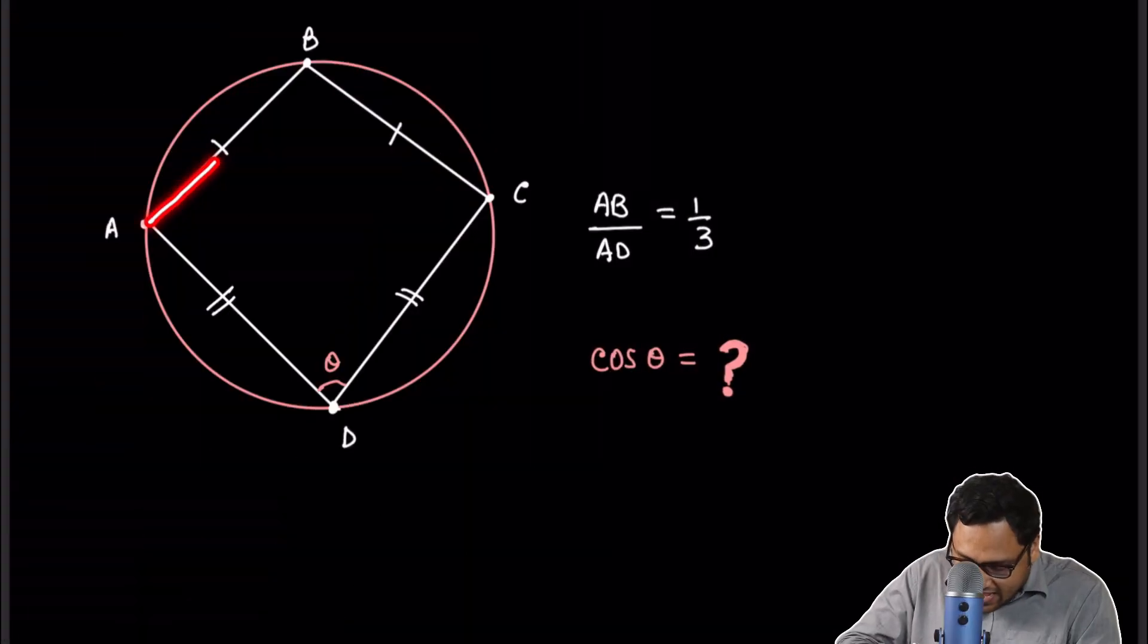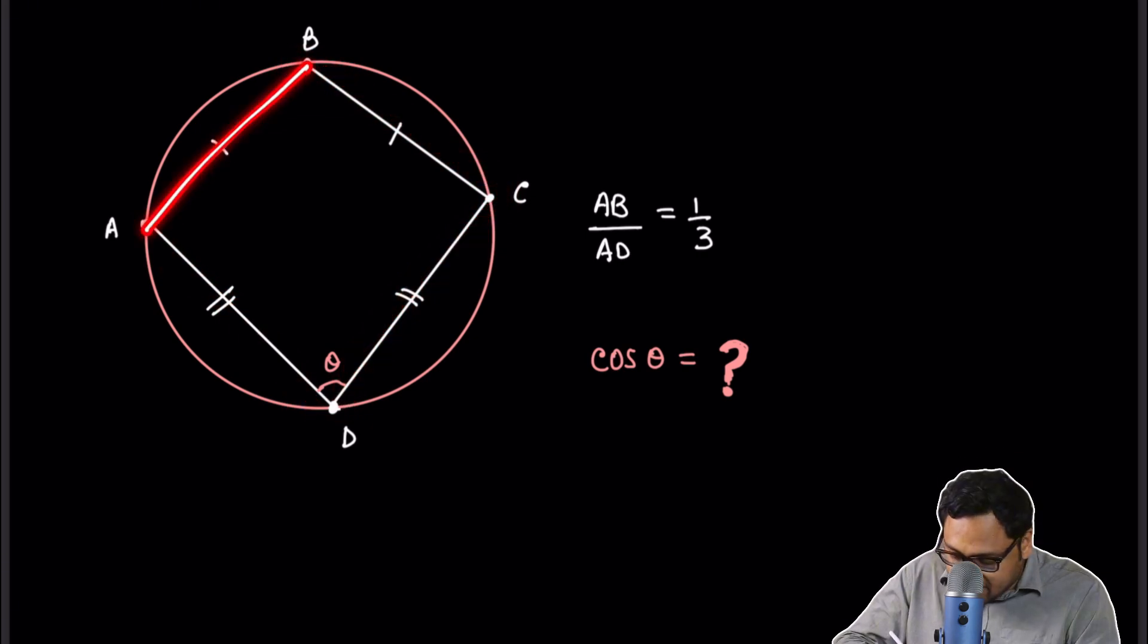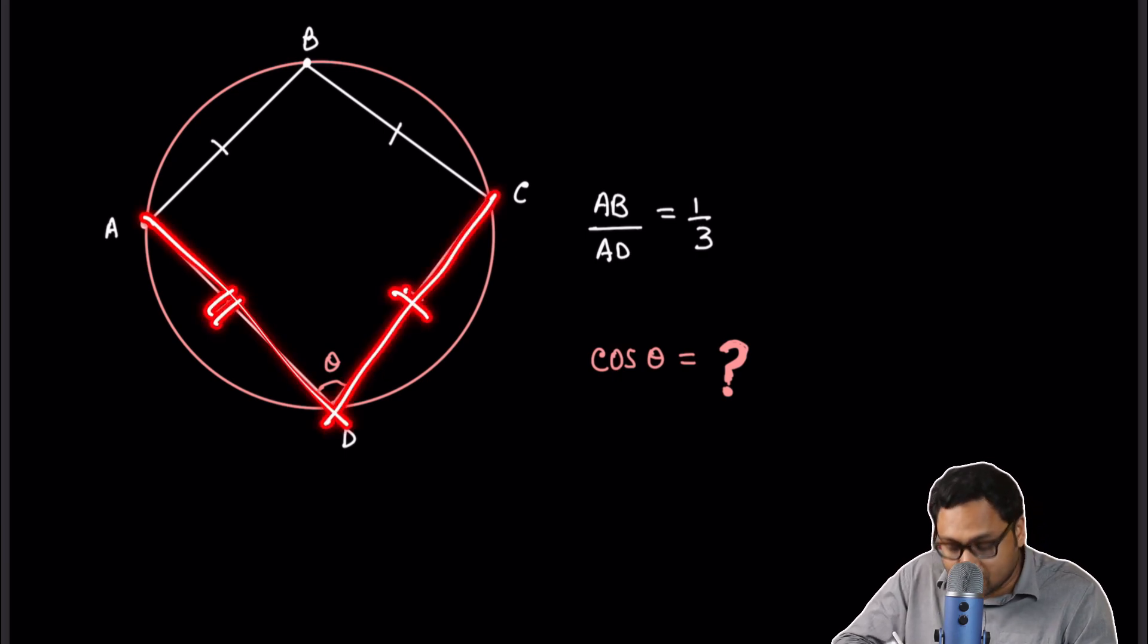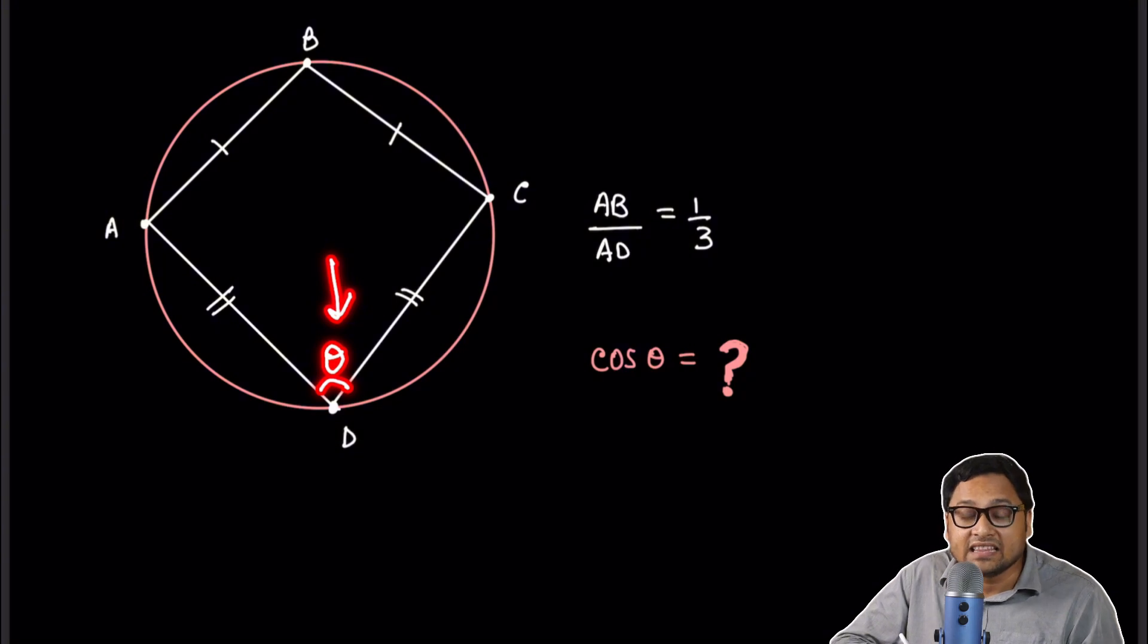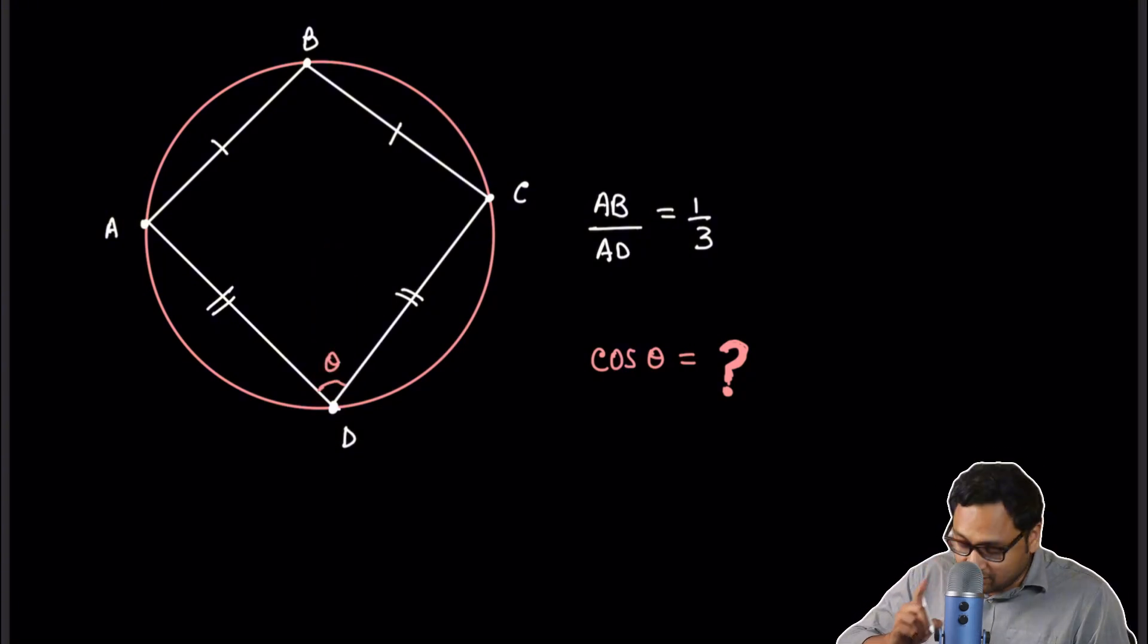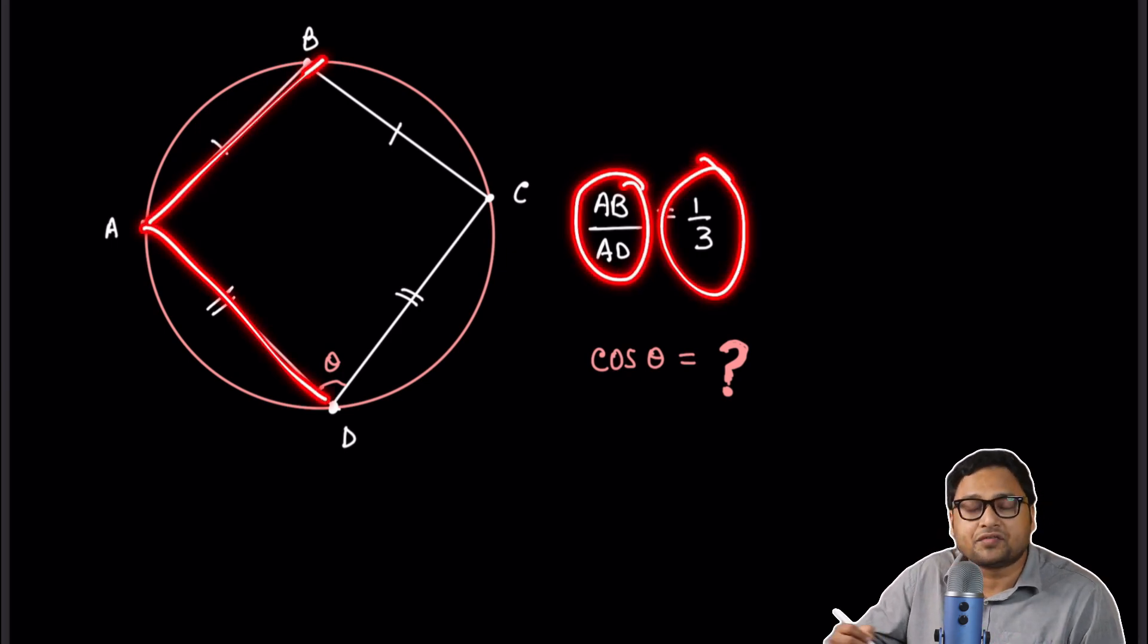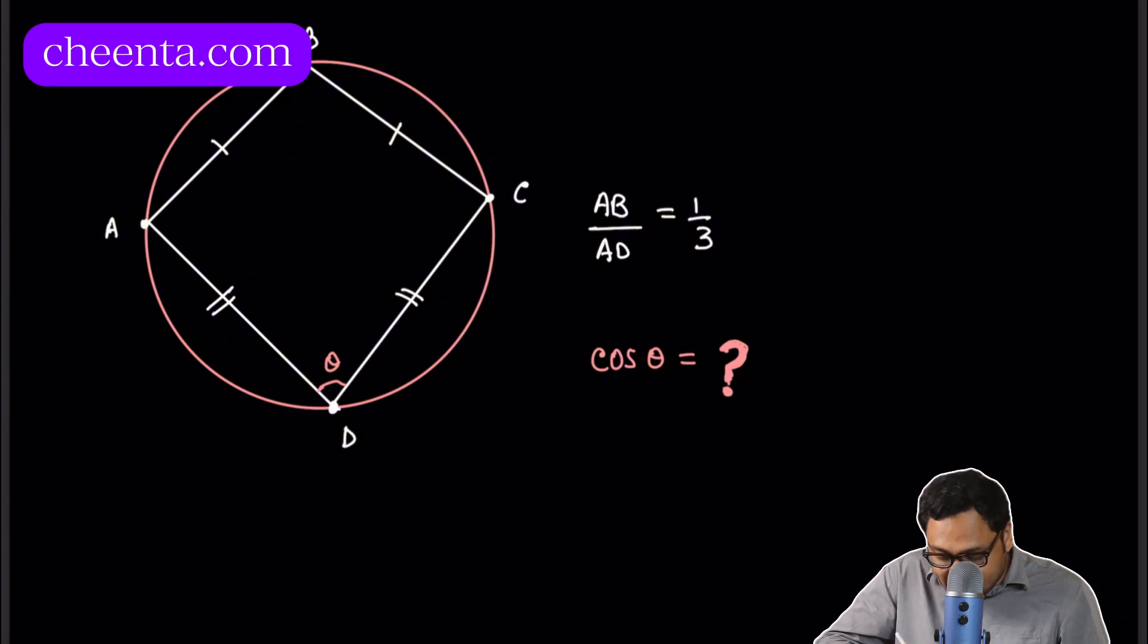The problem says that we have a cyclic quadrilateral ABCD where AB is equal to BC. Both of them are equal and AD and CD are also equal. So it's like a cyclic kite. And we want to find out cosine of this angle theta, angle ADC. There is one more information given. The ratio of AB over AD is 1 over 3. That's the second information.